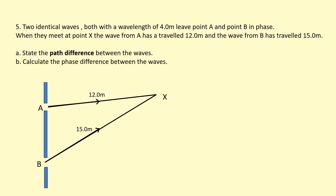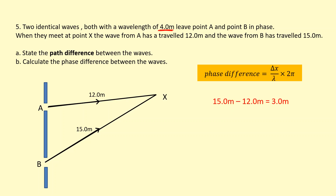In this question, we have two identical waves, both with a wavelength of 4 meters, leaving points A and B in phase. When they meet at point X, the wave from A has traveled 12 meters and the wave from B has traveled 15 meters. The path difference — the difference in the paths — is 3 meters, so the wave from B has traveled 3 meters extra. To calculate the phase difference, the whole cycle is 4 meters represented by the wavelength. Using the same equation with delta X as the path difference: we're basically 3 quarters of a cycle ahead, times 2 pi, giving us the phase difference in radians.